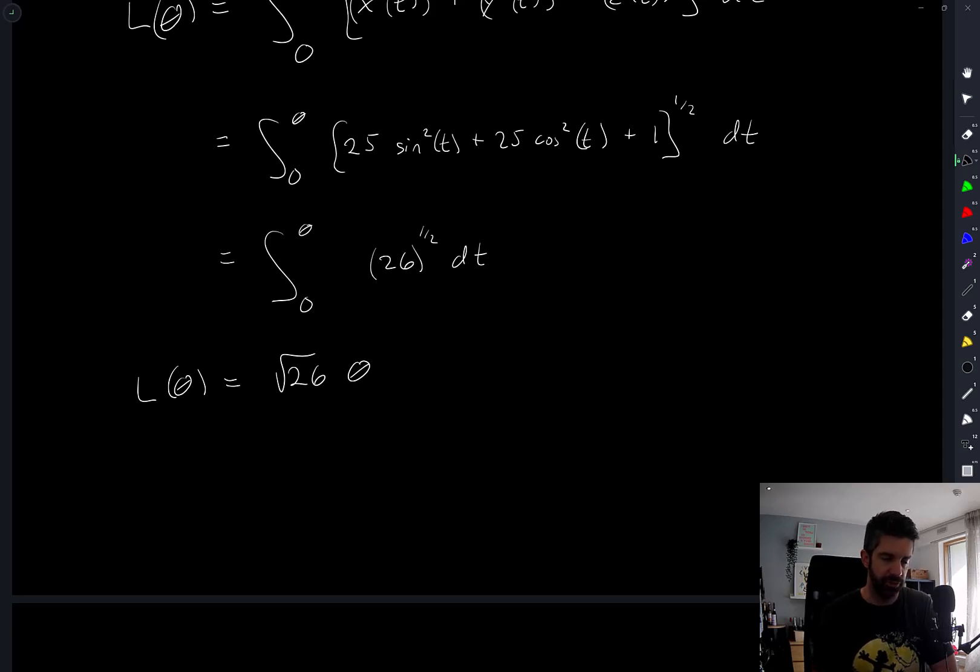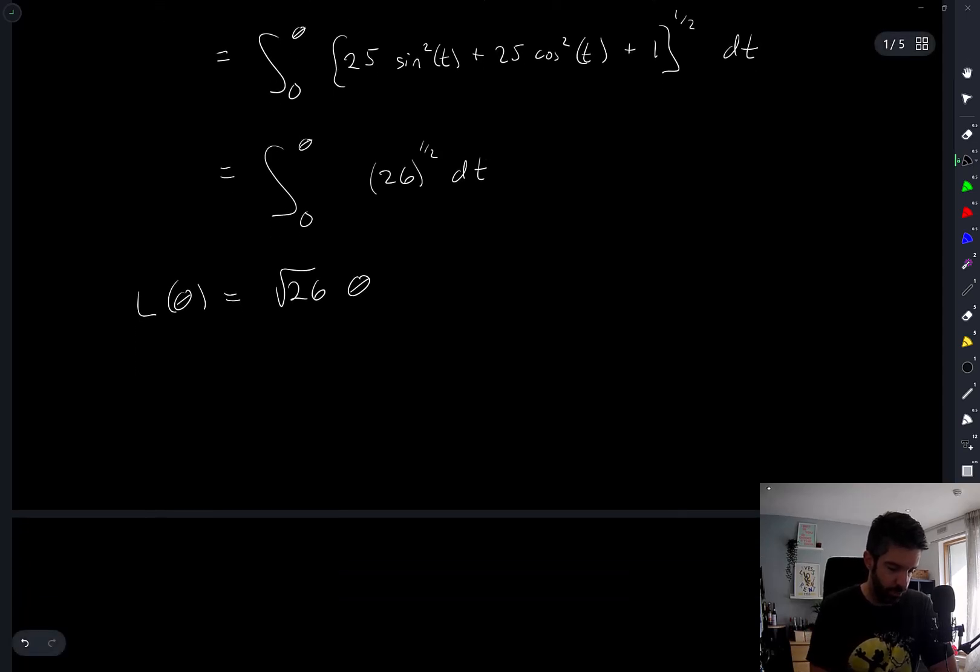I guess it makes perfect sense that the arc length is linear with respect to theta. It's traveling at a constant speed. We're given that L of theta naught is equal to 26.